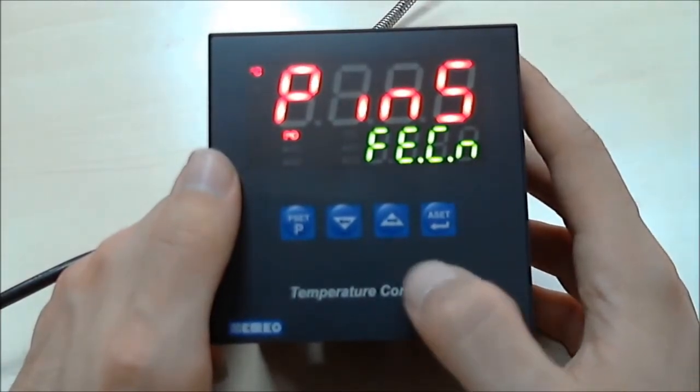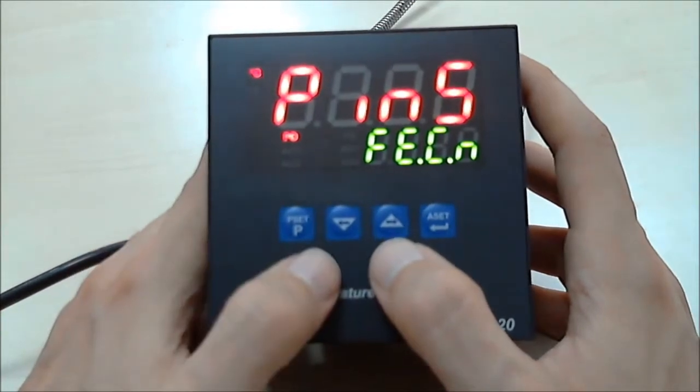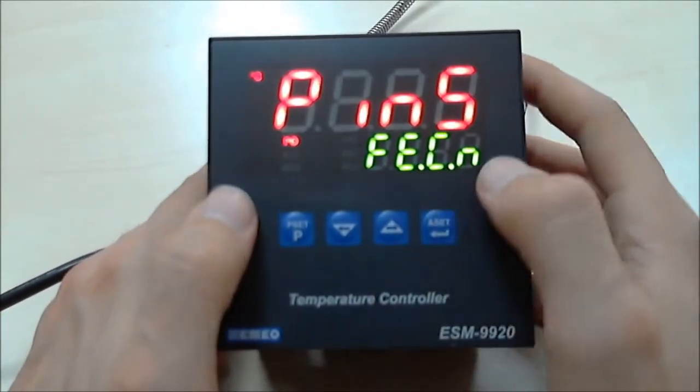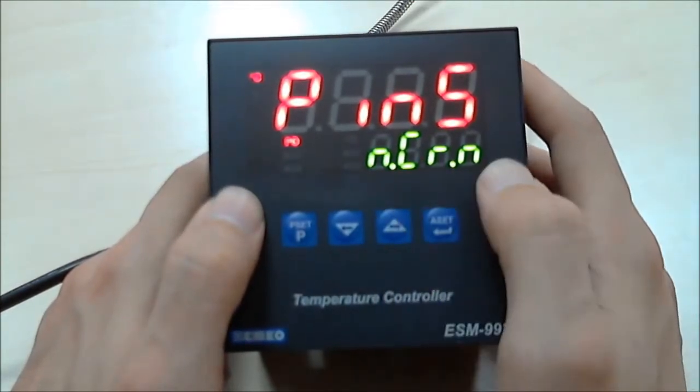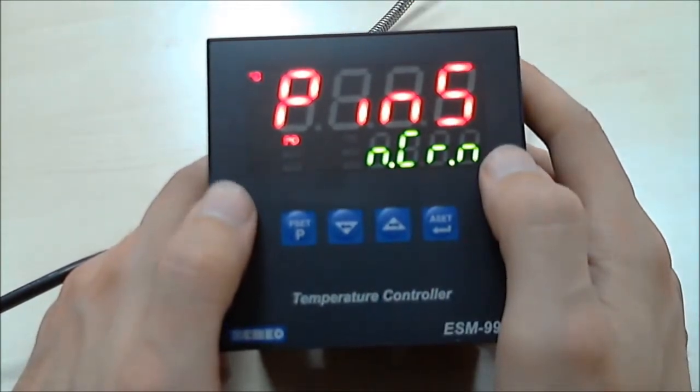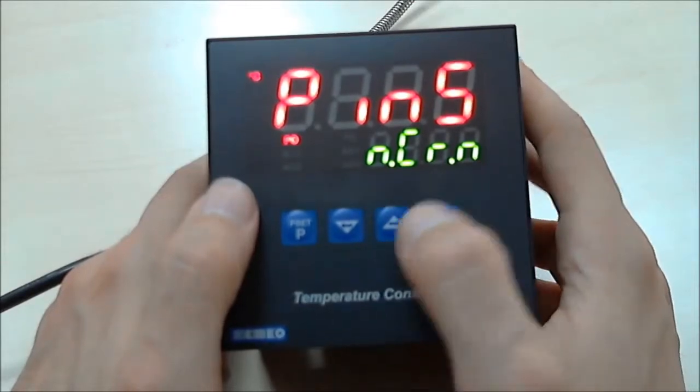You can make your choice by increment or decrement buttons. This is for G-type FECONS thermocouple, and this one is for K-type Nikel-Chrome thermocouple.